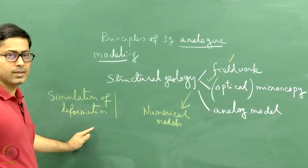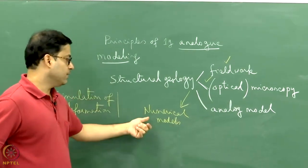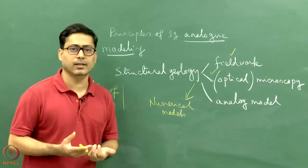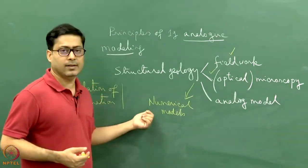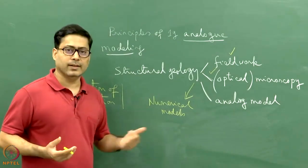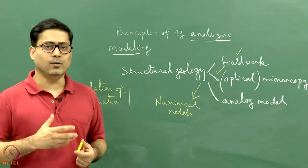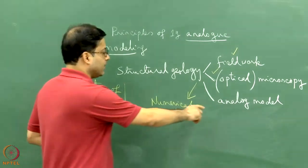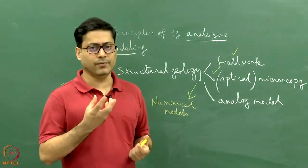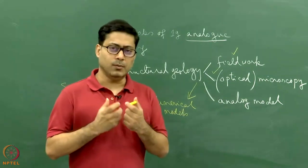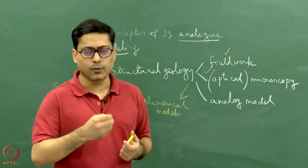Simulation of deformation is possible through numerical models and analog models. In a numerical model, we use differential equations suitable to describe ductile deformation, and the software gives us a simulation of the progressive deformation of the body with time. The analog model, on the other hand, involves no software — it involves soft deformable material that we deform at a controlled rate in the laboratory and observe how it deforms with time.